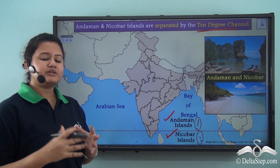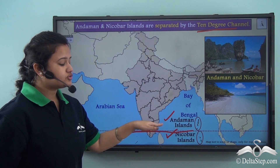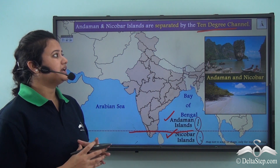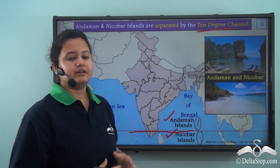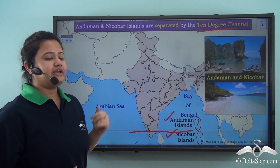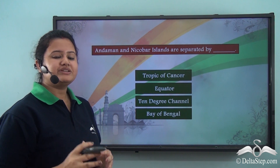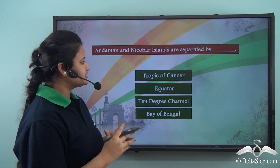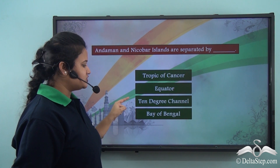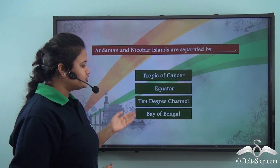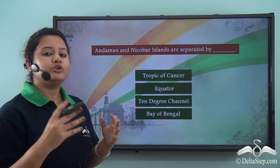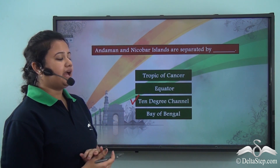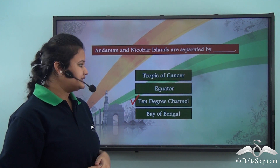The 10 Degree Channel is named after the 10 degrees north latitude that passes through this region, separating the Andaman and Nicobar Islands. A quick question: Andaman and Nicobar Islands are separated by — the Tropic of Cancer, the Equator, the 10 Degree Channel, or the Bay of Bengal? The answer is the 10 Degree Channel, as a narrow stretch of water by that name separates the two island groups.